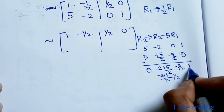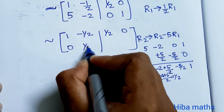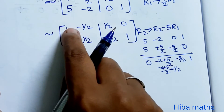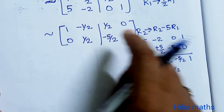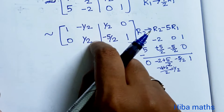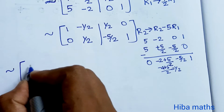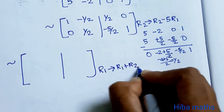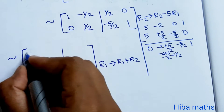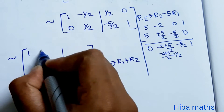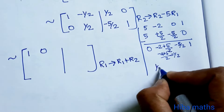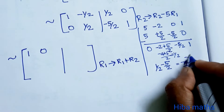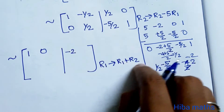Now, R2 has 1/2 in the pivot position. We multiply R2 by 2: R2 → 2×R2, giving [0, 1 | -5, 2]. Then to eliminate the -1/2 in R1, we apply R1 → R1 + R2. So: 1+0=1, -1/2+1/2=0, 1/2+(-5/2)=-2, 0+1=1. R1 becomes [1, 0 | -2, 1].